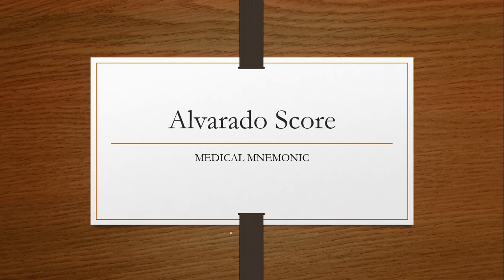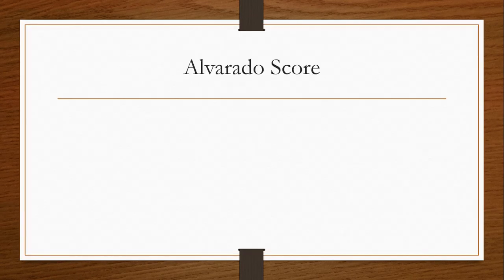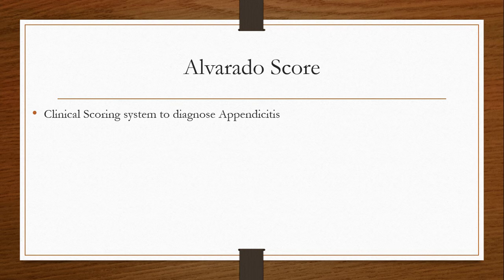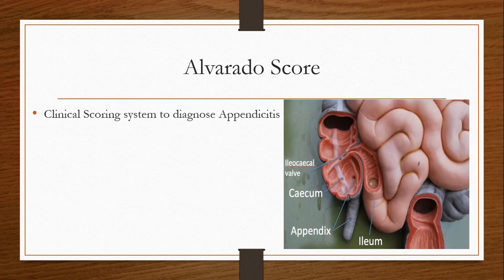Today I'm going to talk about the Alvarado score. The Alvarado score is a clinical scoring system to diagnose appendicitis. Appendicitis is the inflammation of the appendix.